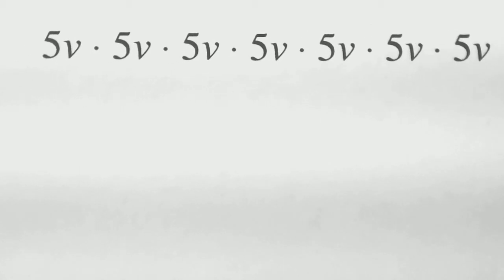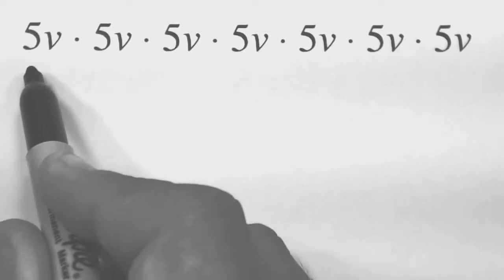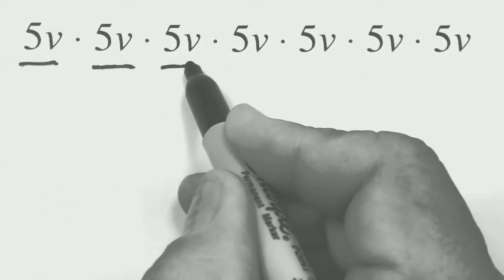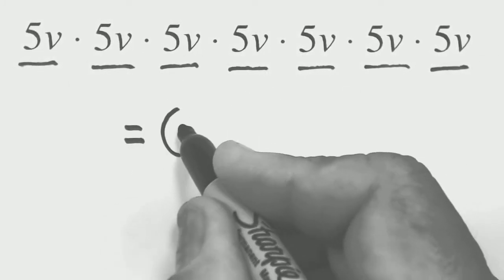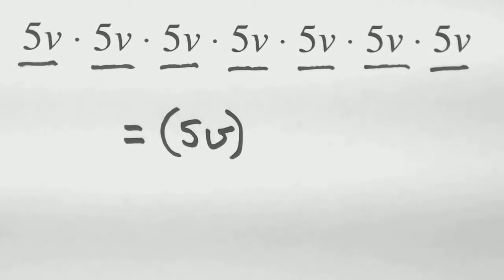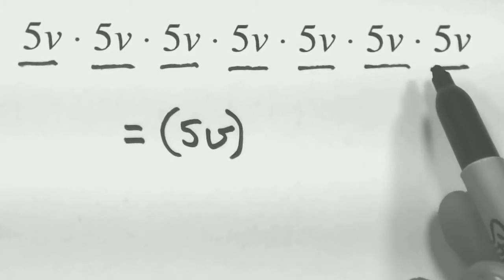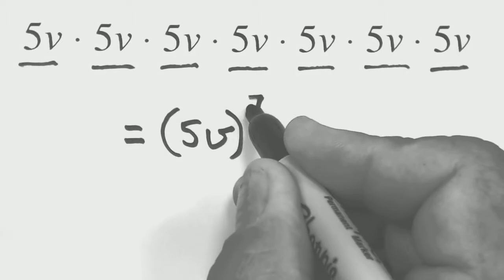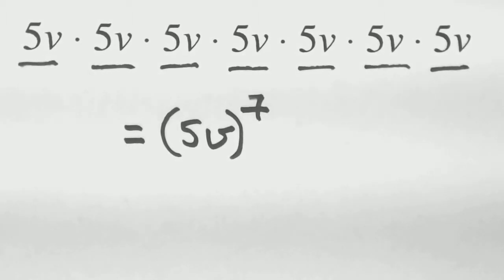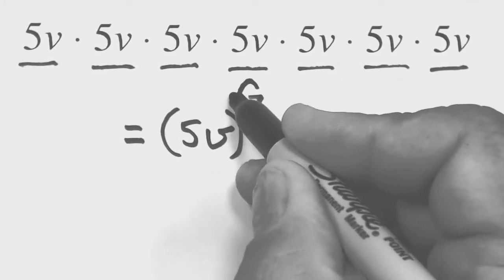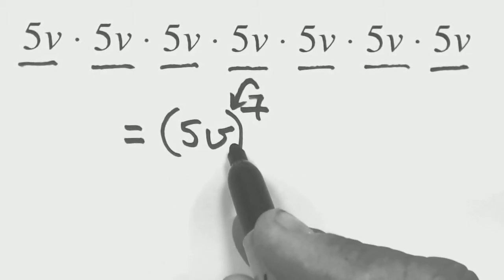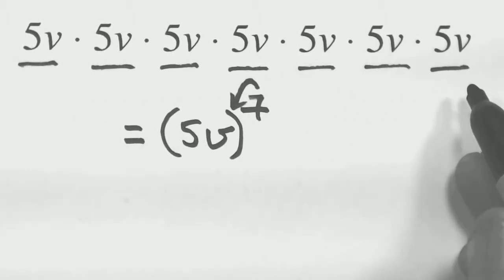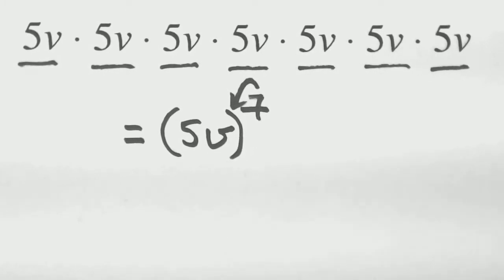You can even have other types of bases. Here's an example where the base throughout is 5v — we see it in each one. To write this in exponent notation, the whole base is 5v, so put parentheses around it. There's a total of 7 of these, so write (5v) to the 7th power. The power only affects the parentheses, meaning there are 7 of these 5v's multiplying each other — exactly what we had above.